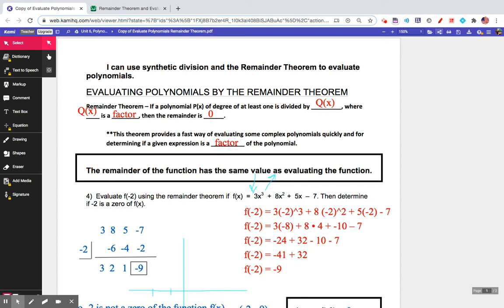Welcome to a lesson on evaluating polynomials by using the remainder theorem. The remainder theorem says if a polynomial P(x) of degree at least one is divided by Q(x), where Q(x) is a factor, then the remainder is zero.